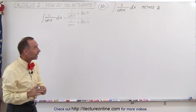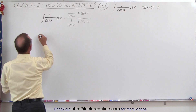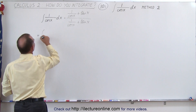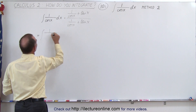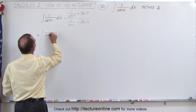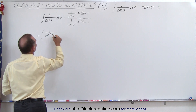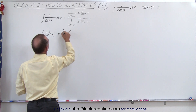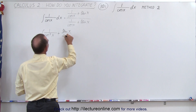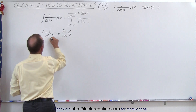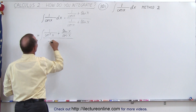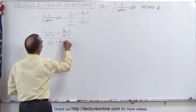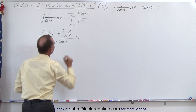So when we do that, we get the following. This becomes equal to, when we multiply this times the numerator, the integral of 1 over the cosine squared of x plus the tangent of x divided by the cosine of x — all divided by 1 over the cosine of x plus the tangent of x — times dx.